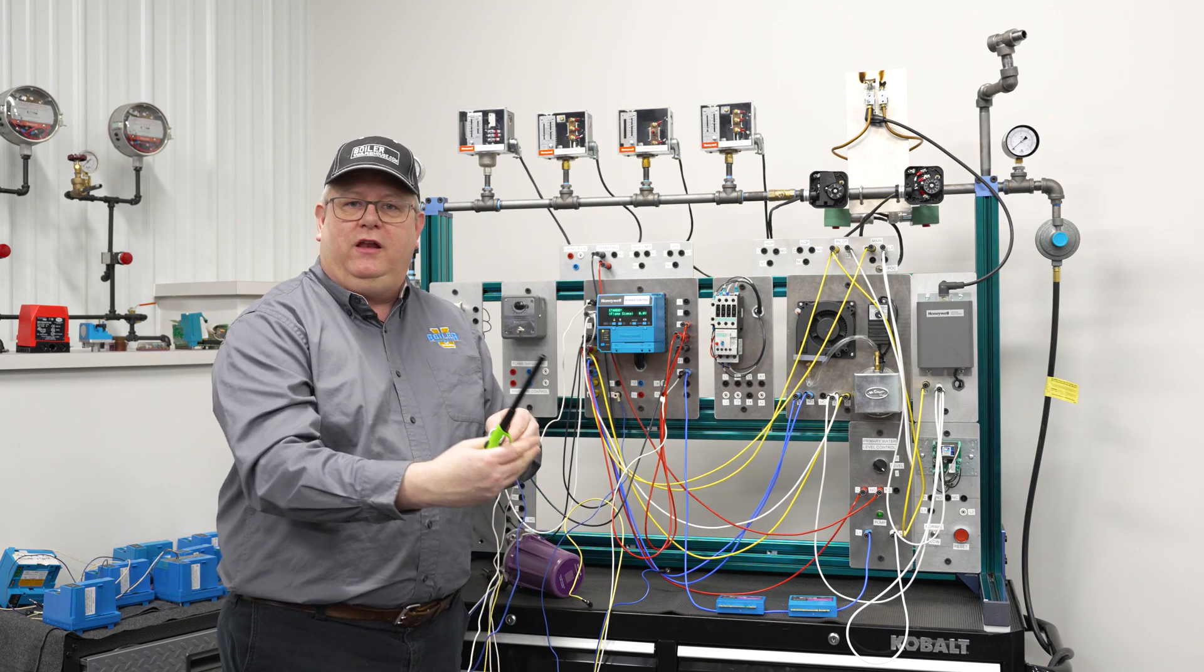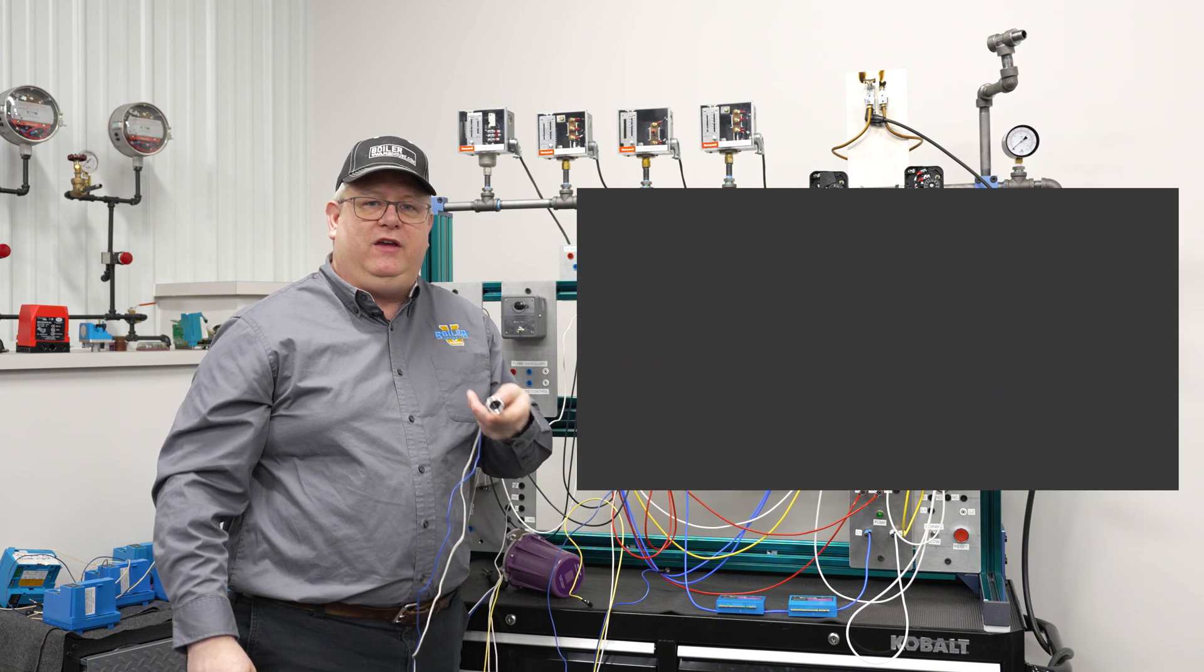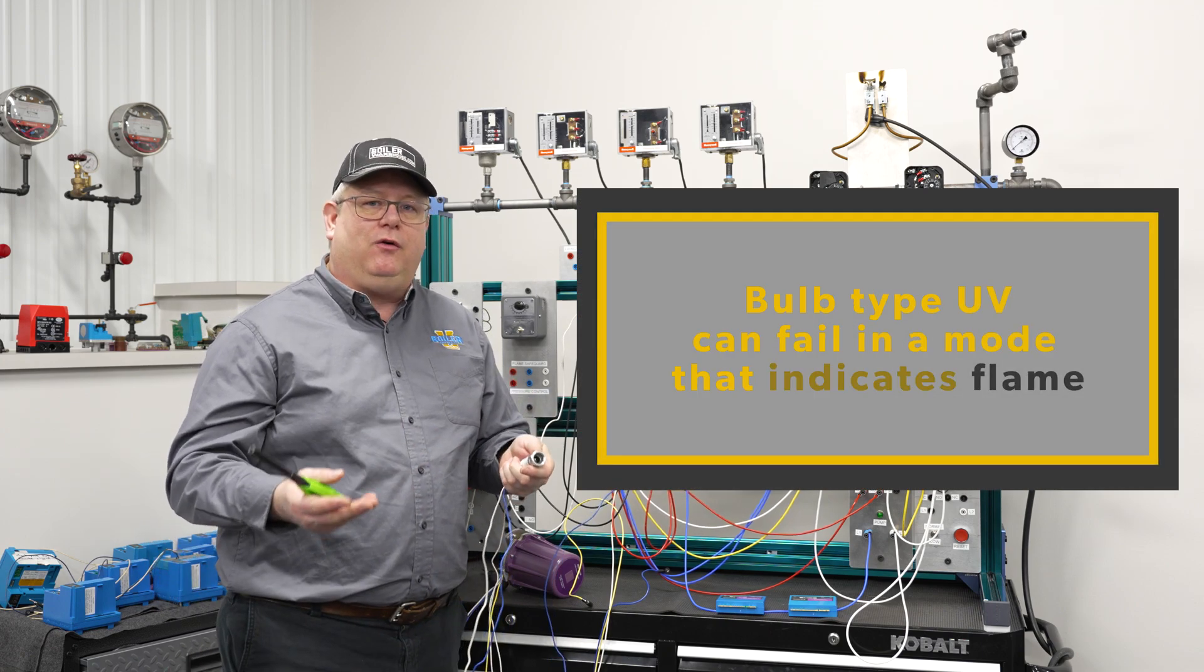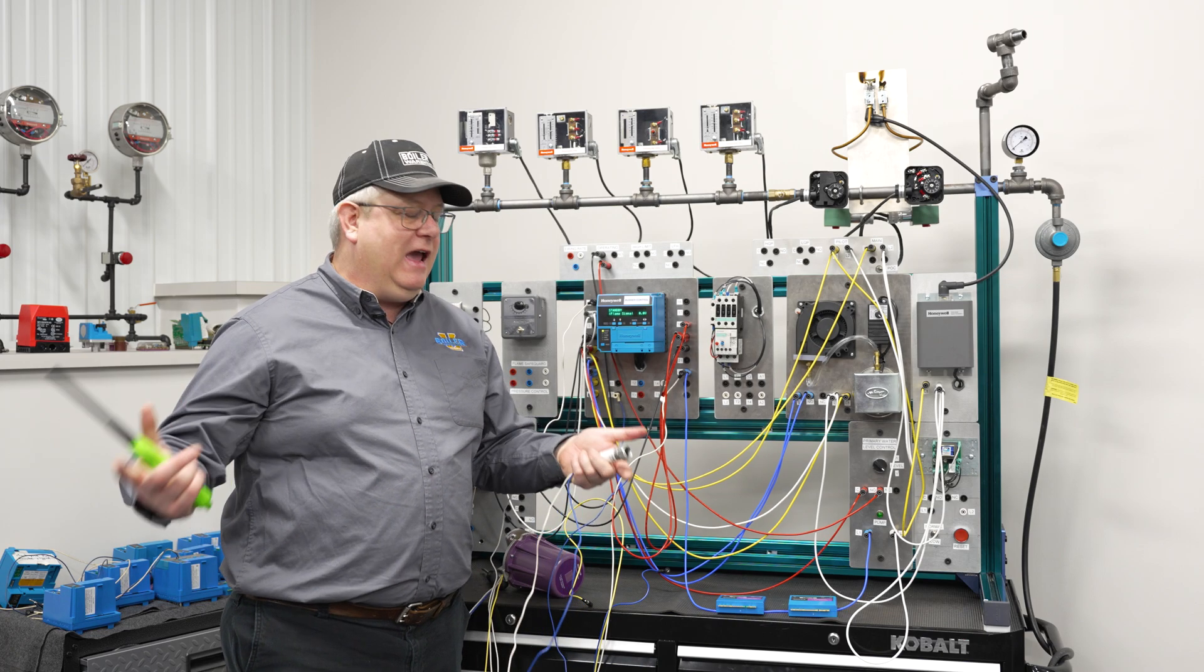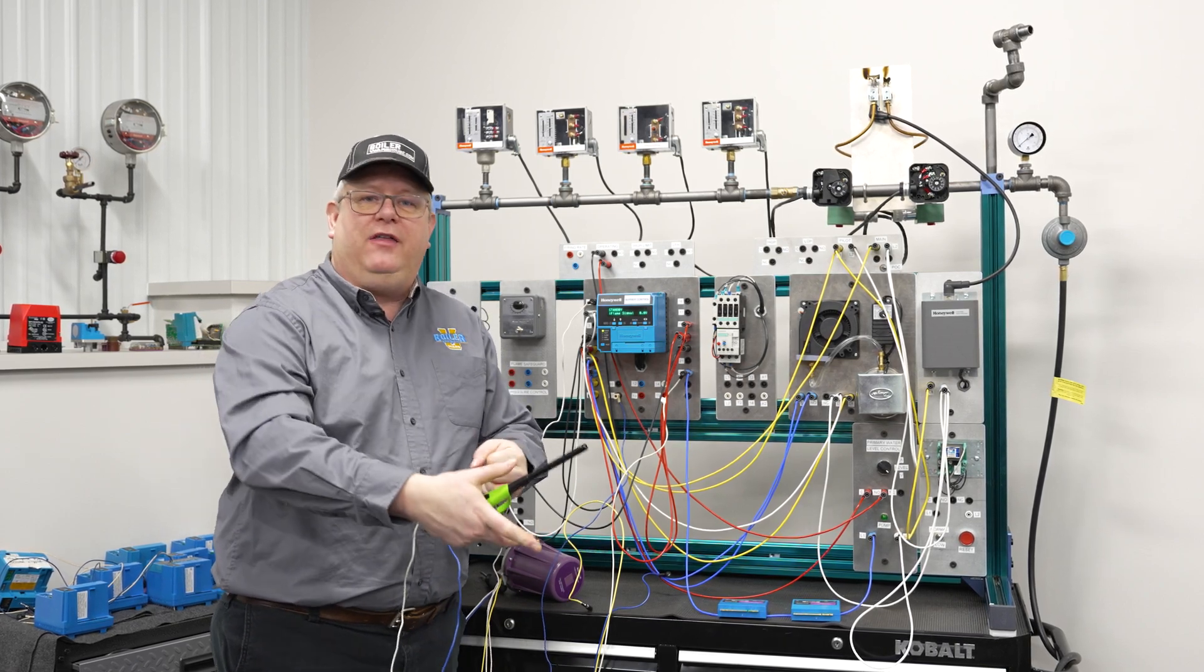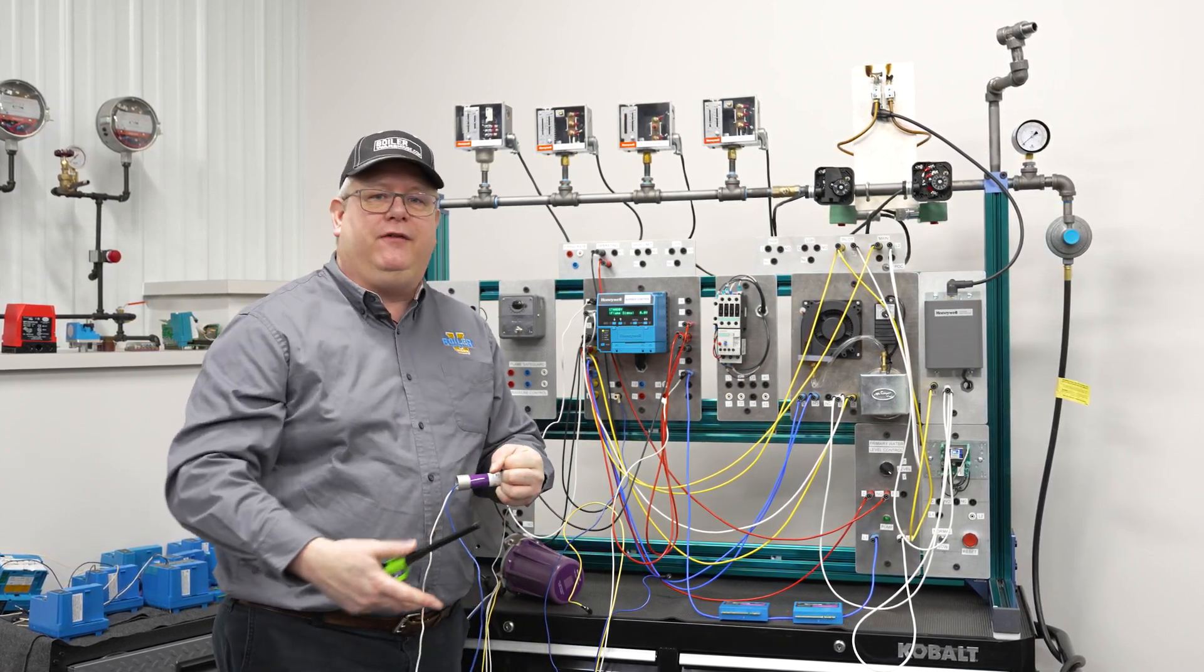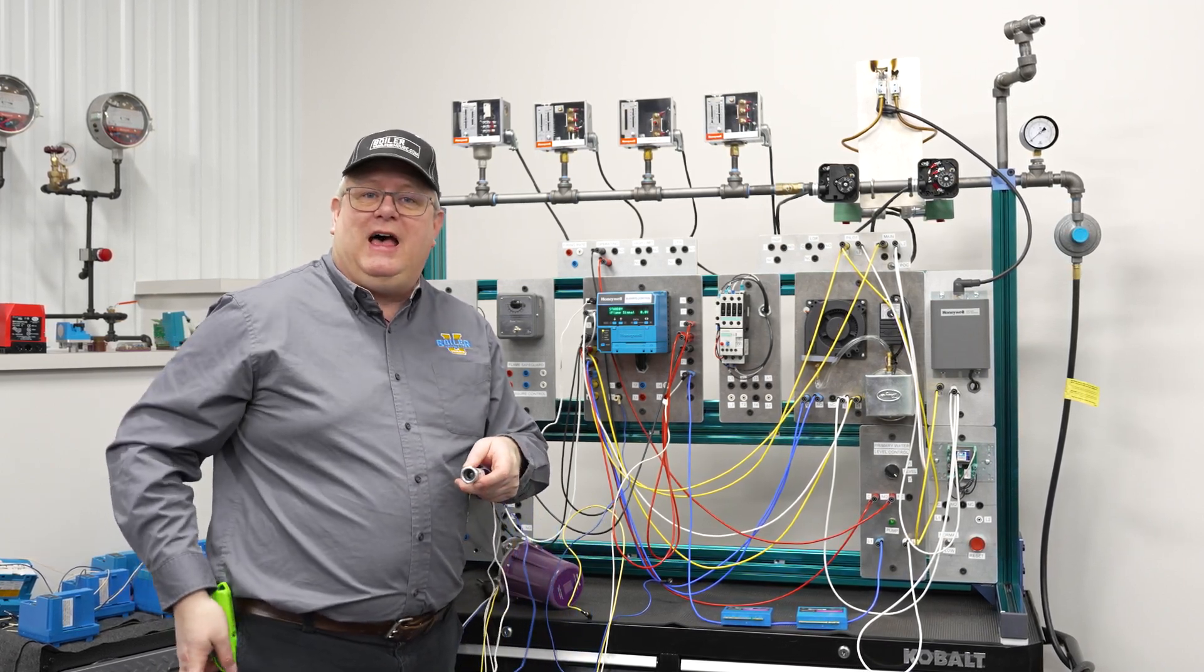The issue with a bulb-type UV is that it can fail in a mode that indicates flame. So while occasionally I may pull a scanner off, cover the top, and verify that it fails on flame failure, if we're not doing that test and we lose flame...